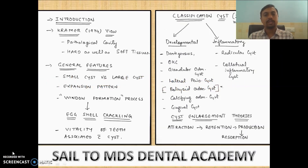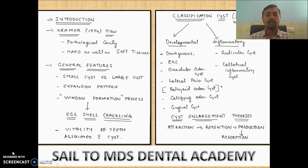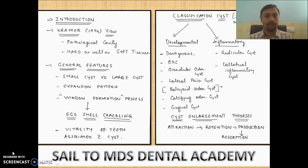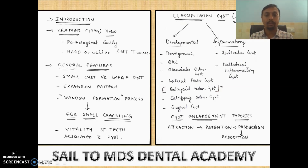Odontogenic cysts - how do they develop? It is the abnormal proliferation of the odontogenic epithelium by some unknown stimulus. Why do we study cysts? It has very good clinical importance because cysts tend to cause facial asymmetry, disturbance of dentition, and in some cases neurological deformity. In some cases, when a cyst is very large, it predisposes the jaw to fracture. This is very important from both the clinical and exam point of view.